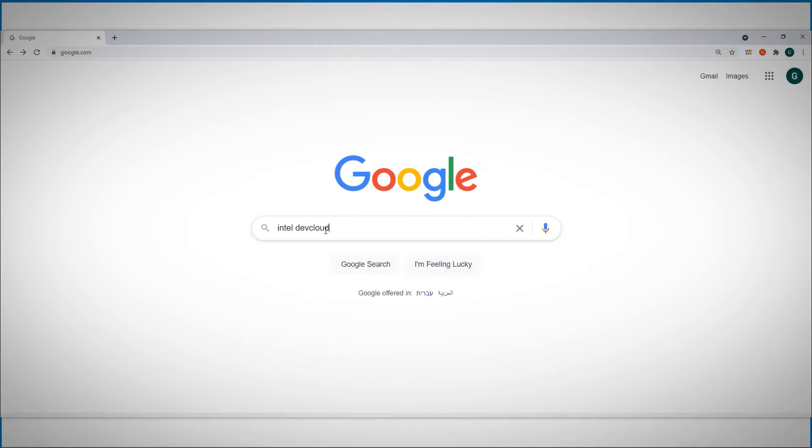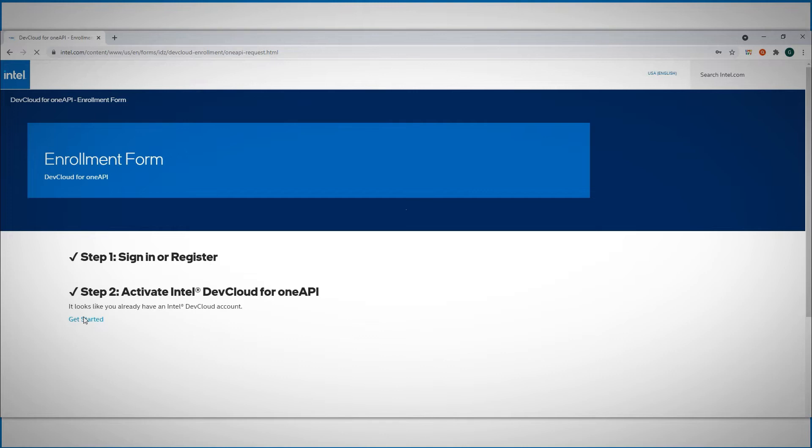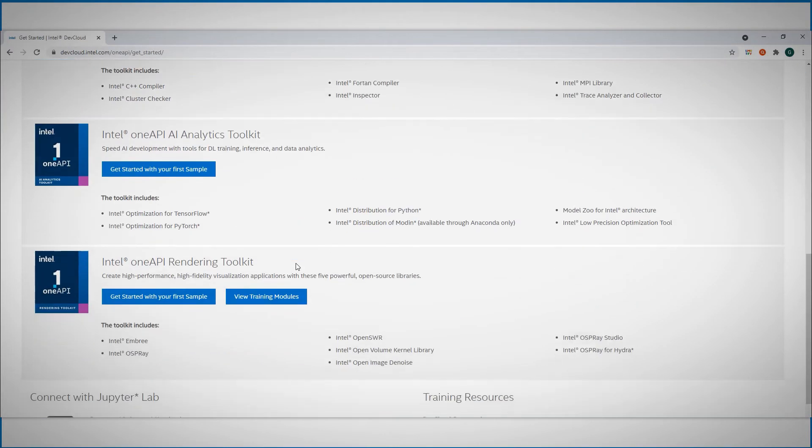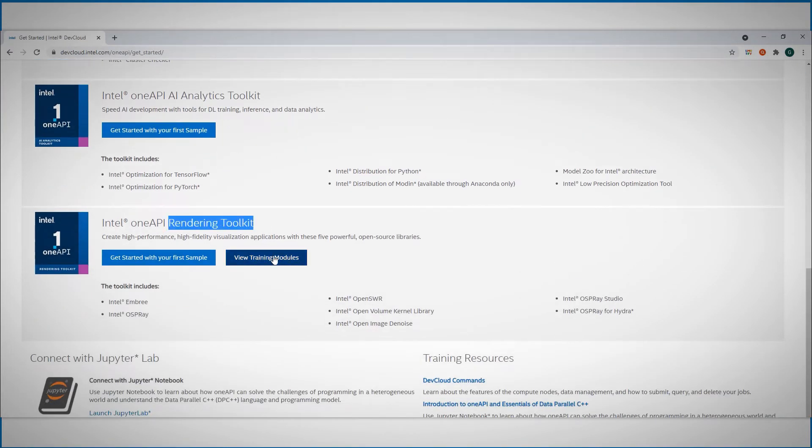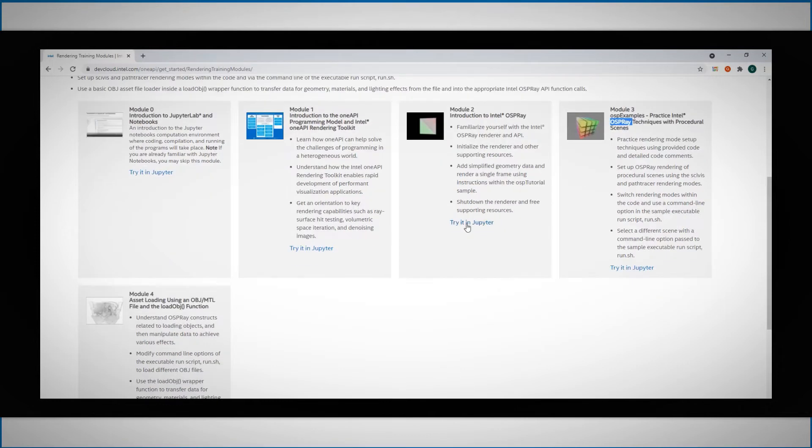Option 1 is to look for the Intel dev cloud. Choose the OneAPI dev cloud, get started, scroll down to the rendering toolkit. In the training modules you can find ready to use Jupyter notebooks on programming OneAPI, intro to OSPRay and many other examples. Try it out.